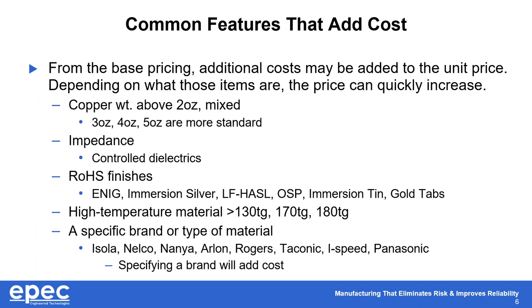RoHS finishes — everyone knows RoHS is about getting the lead out of the PCB; lead is pretty much the only non-compliant RoHS material involved. So when you add immersion gold, immersion silver, lead-free HASL — any one of these surface finishes — that is an additional cost adder. Hot air solder level is the original surface finish used on PCBs and is slowly phasing out of PCB processing, though I do not see it phasing out for military ITAR work.